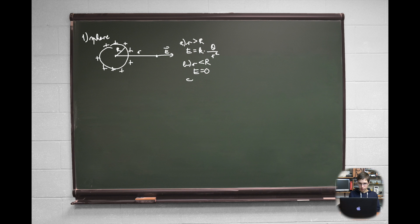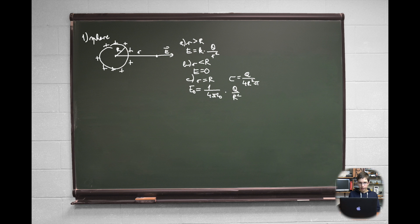If the point is inside the sphere, meaning small r is less than big R, the electric field is 0. The final case is when the point charge is exactly at the sphere surface; then the electric field is E₀, the maximum electric field. Here we also have sigma, the surface charge density, which is the proportion of charge q over the total sphere's surface 4πR². Then this maximum electric field E₀ = k·q/R² = σ/ε₀.